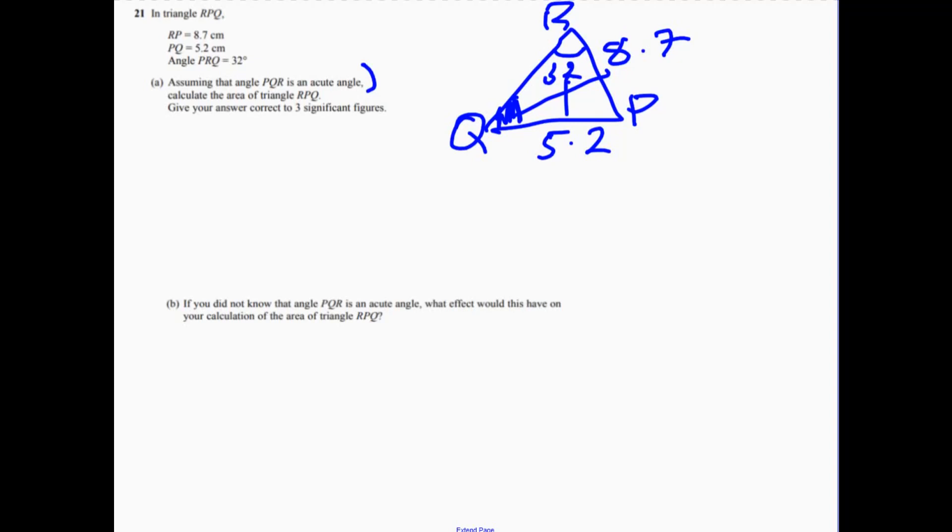So we need to use sine rule. So we're trying to find the angle. So the sine of Q over the opposite side, over 8.7, is equal to the sine of 32 over 5.2.